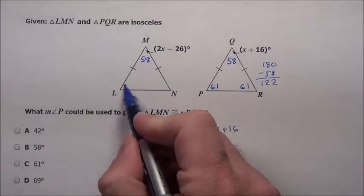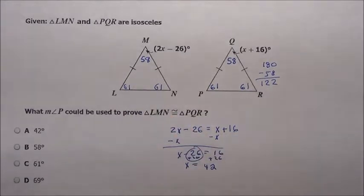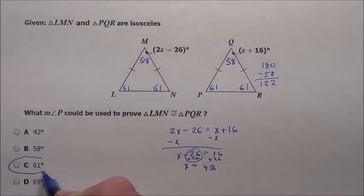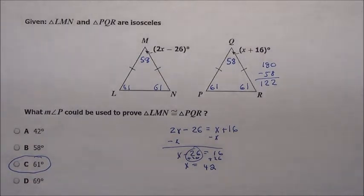And over here you're going to have the same thing, 61 and 61, because that corner has got to be 58. So angle P is going to have to be choice C, 61 degrees. There you have problem 25.